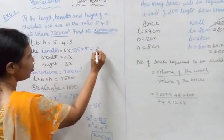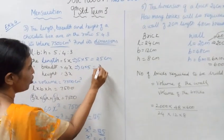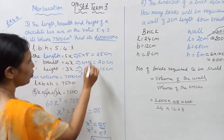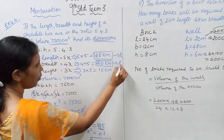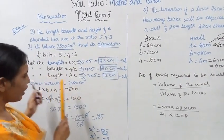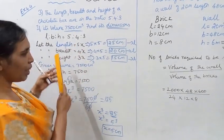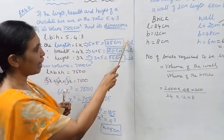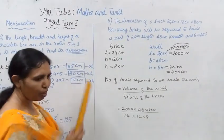Height is 3x: 3 into 5 equals 15 cm. These are the dimensions — this is L, this is B, and this is H. The dimensions are found using the ratio and the volume. This is worth 5 marks.